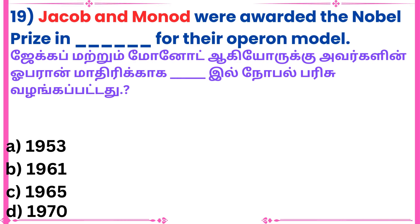19th: Jacob and Monod were awarded the Nobel Prize in dash for their operon model.